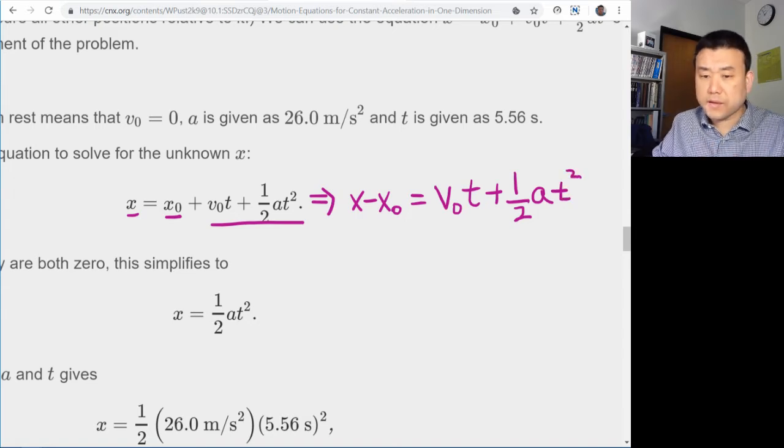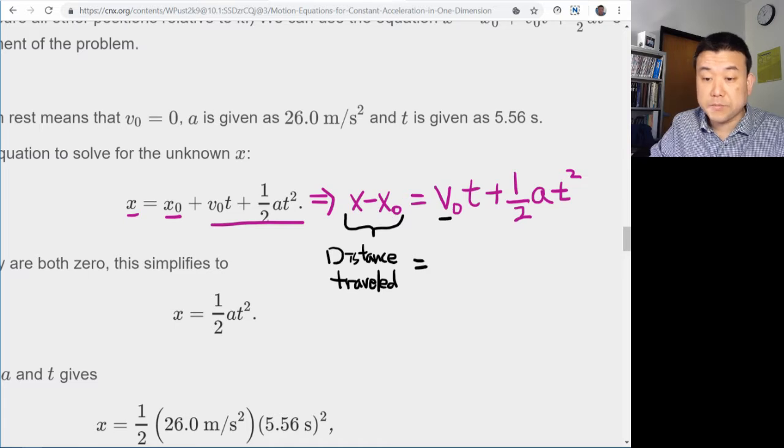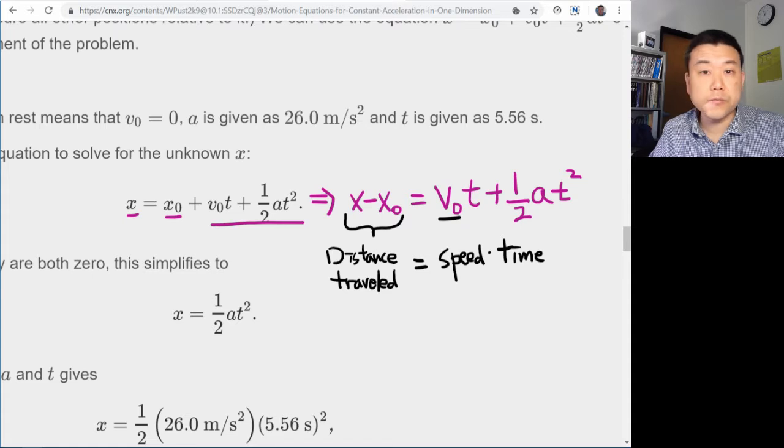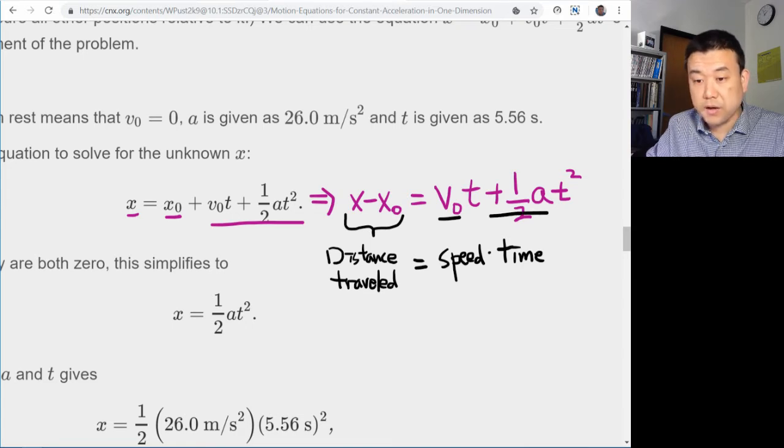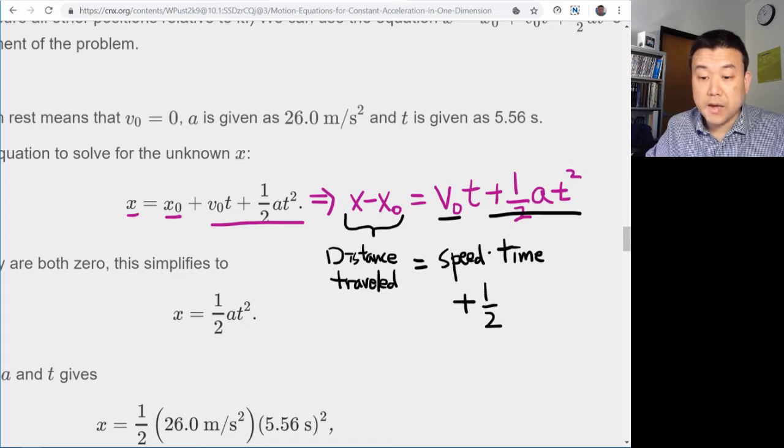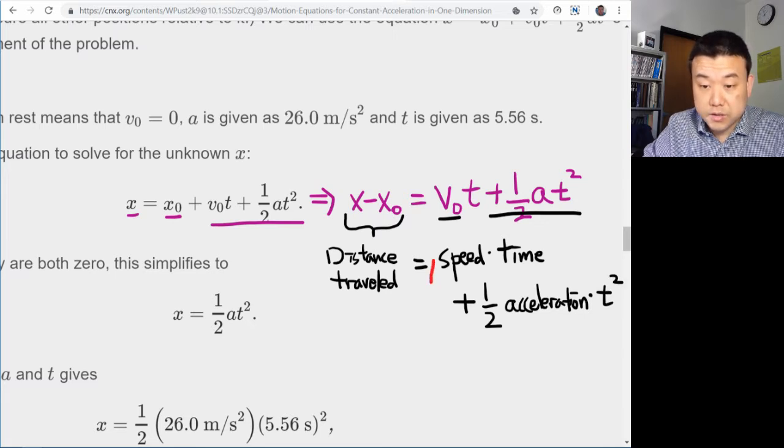V-naught times time plus one-half times acceleration times time squared. And really what this means is in plain language, this is the distance traveled. And that's equal to speed times the duration of time. And you might remember something like this from constant speed motion. So with there being acceleration, what changes is now you have this second term.